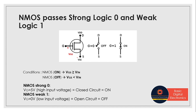Now let's see how NMOS passes strong logic 0 and weak logic 1. First, the condition to turn on an NMOS transistor: VGS has to be greater than or equal to VTN. Notice we are not using any modulus here because for NMOS the threshold voltage is already positive — it will never be negative. For NMOS, the drain terminal is connected to the higher potential value (VDD) and the source terminal is connected to VSS. Generally the gate voltage equals VDD for NMOS, so we name it VGS.